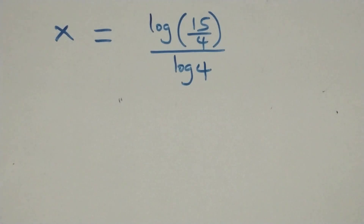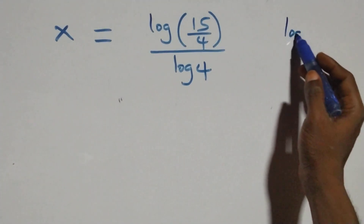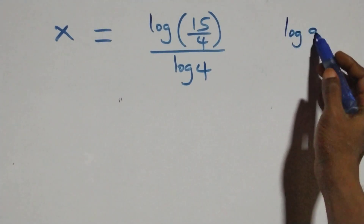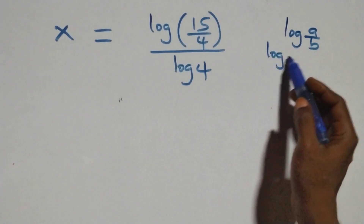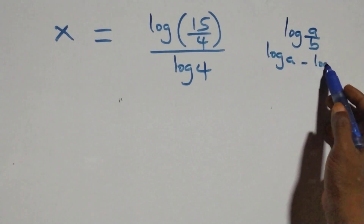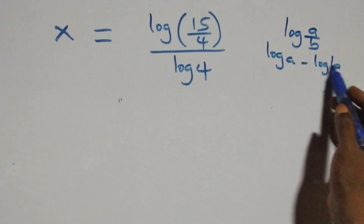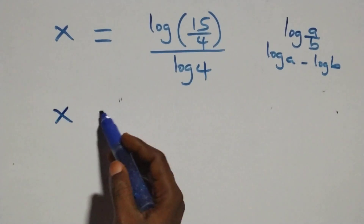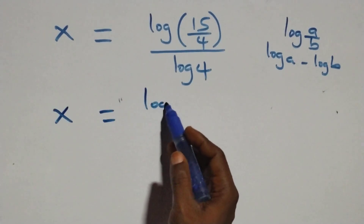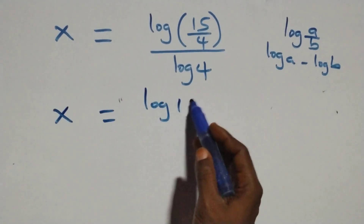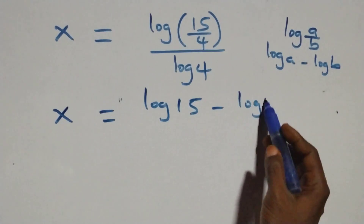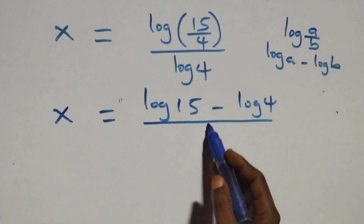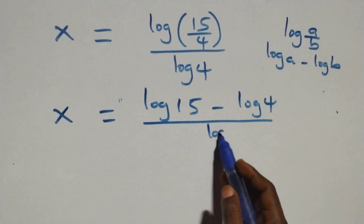Here we apply the law of logarithms. We have log(a/b), which is the same thing as log a minus log b. So here we have x equals log 15 minus log 4, all over log 4.